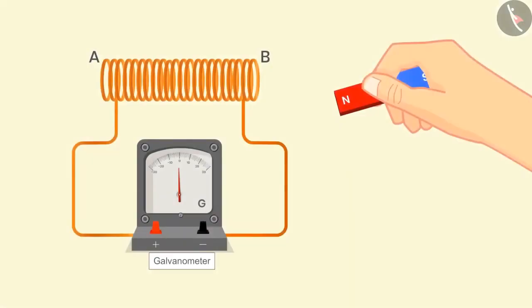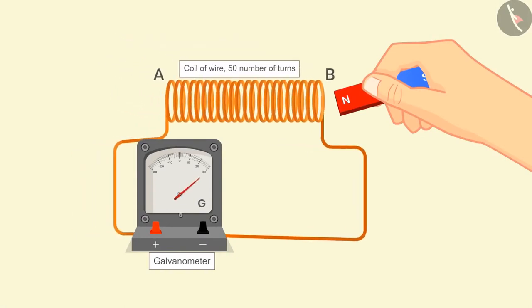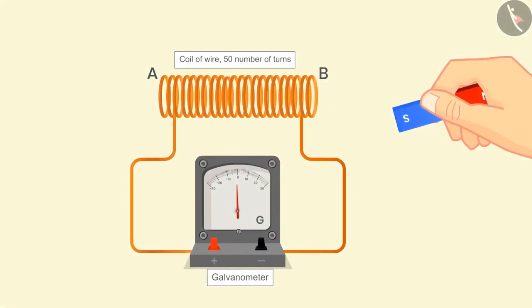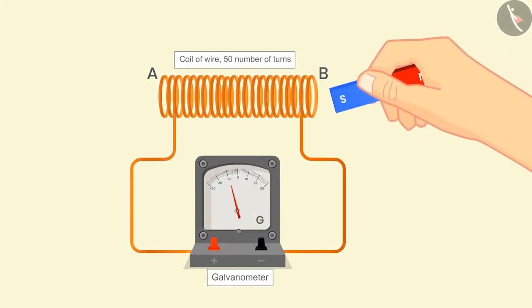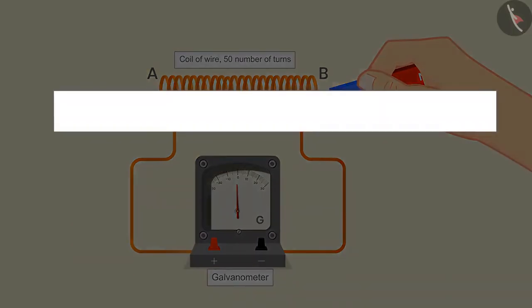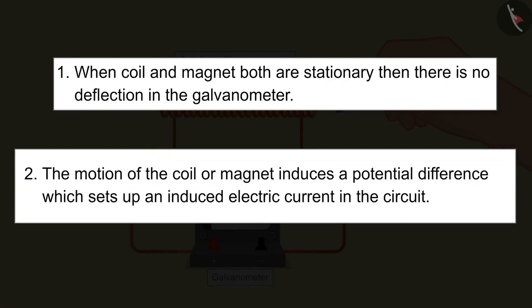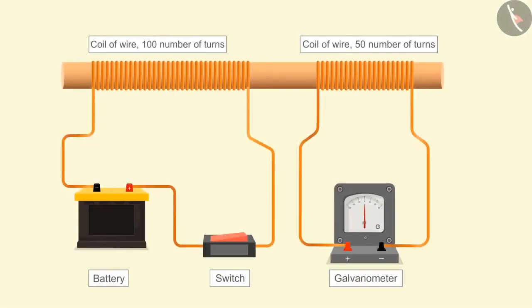In the second case, we keep the magnet stationary and move one end of the coil towards the north pole of the magnet — the needle shows deflection on the right side, and on the left side if we move the coil away. In the third case, if we move the south pole of the magnet towards the coil, the deflection will be opposite to case one. We can infer from this activity that when both the coil and magnet are stationary, there is no deflection in the galvanometer. The motion of the coil or magnet induces a potential difference which sets up an induced electric current in the circuit.